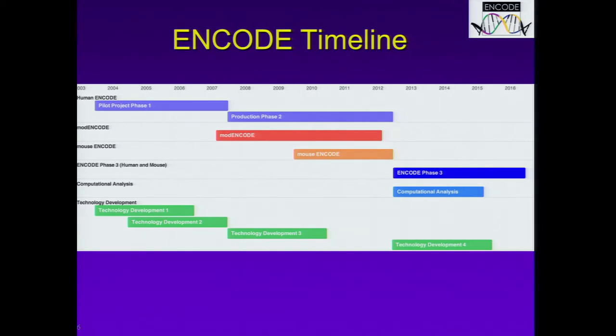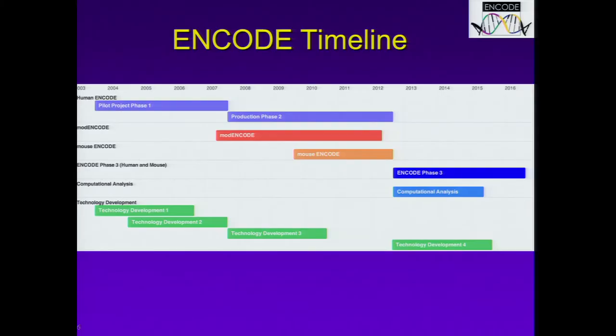This slide outlines the timeline for the ENCODE project. We started back in 2003 with a pilot project covering a well-defined 1 percent of the human genome. At that same time, we initiated the first of a number of technology development initiatives, which we felt was important in order to create the resource we were interested in making. Based on the success of the pilot project, in 2007 we launched the production phase of ENCODE, going from 1 percent of the genome to 100 percent and complete genome analysis. Also in 2007, we launched the modENCODE consortium, which focused on creating a catalog of functional elements in the fly and worm genomes.